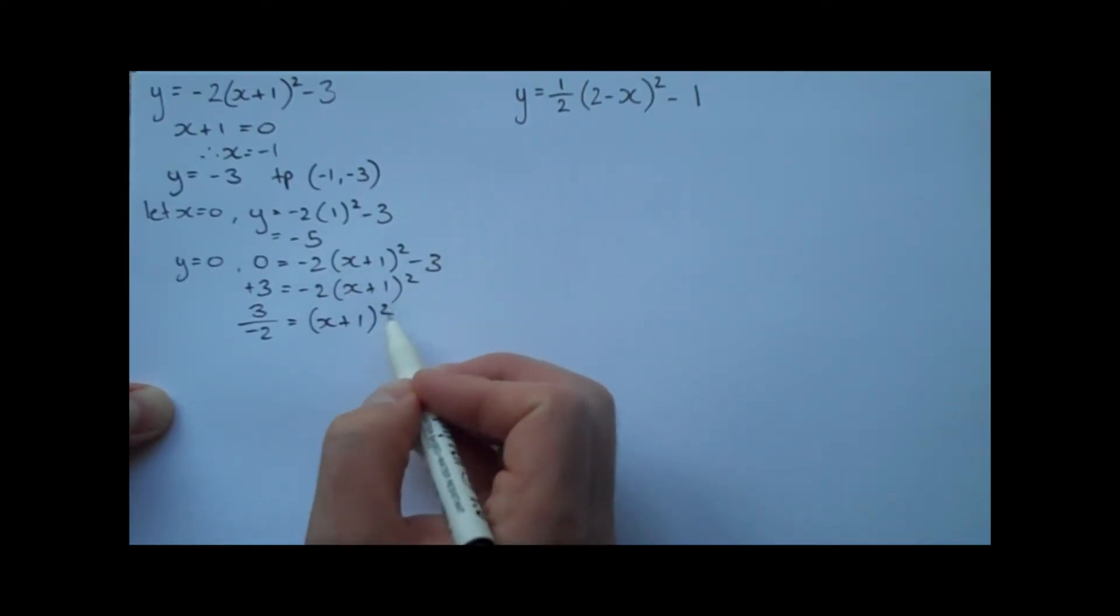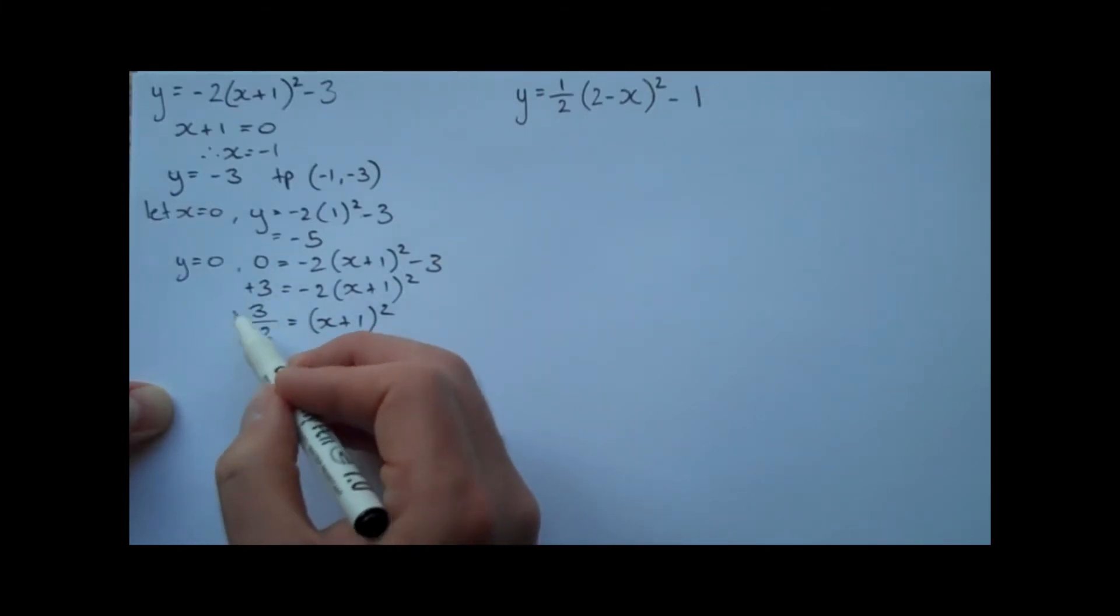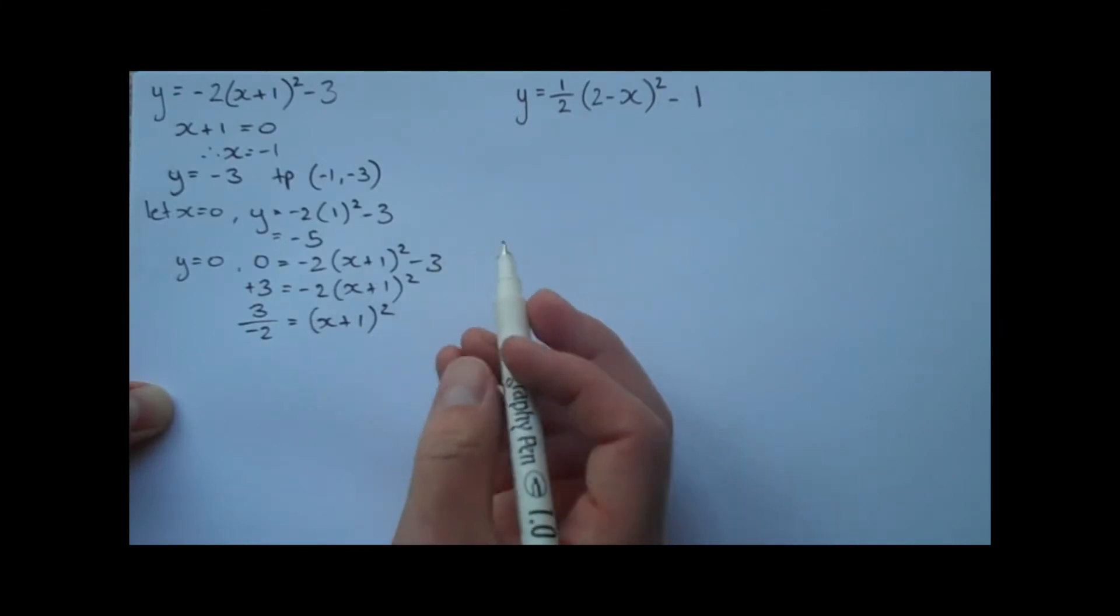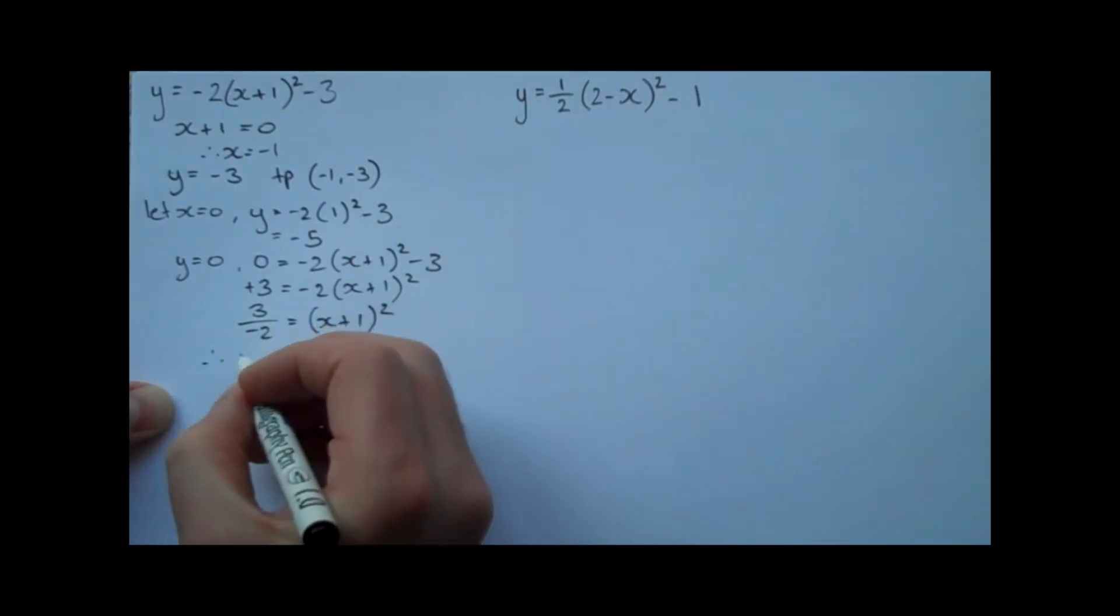Now, to get rid of this squared term, we need to take the square root. But it's a little bit troubling here, because we know that in the real number system, we can't find the square root of a negative number. So what this tells us is that there is no x-intercepts.